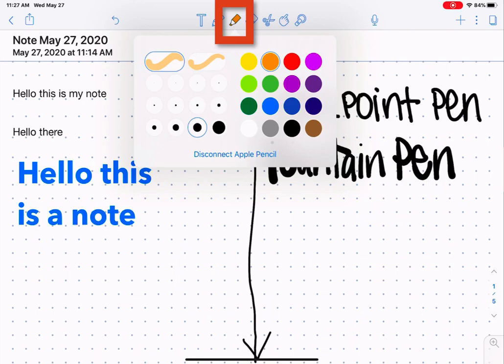The next option is your highlighter tool. Your highlighter tool has the same options for a ballpoint highlighter and a fountain highlighter. Color options are the same. You can pick from the default colors or from your colors and you can also change the thickness.